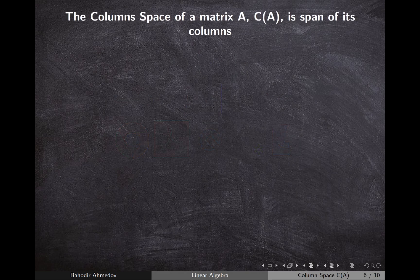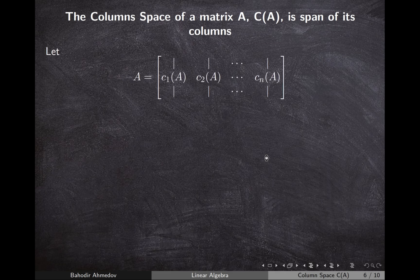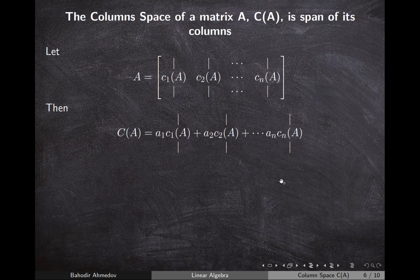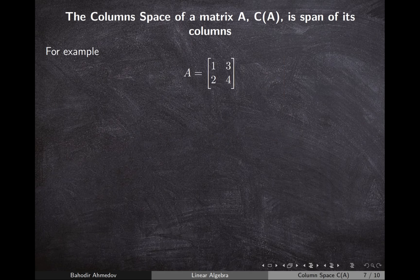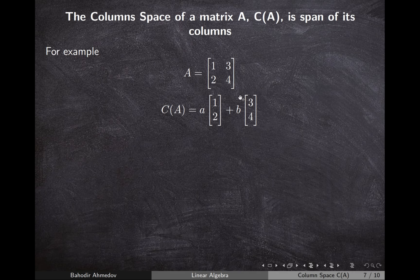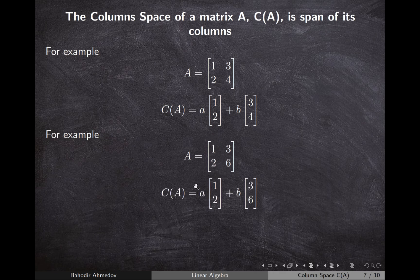The column space of a matrix is the span of its columns. If your matrix has n columns, the column space contains all possible linear combinations of those columns. For example, with matrix A having columns (1, 2) and (3, 4), the column space is the whole 2D space. But with columns (1, 2) and (3, 6), the column space is just a line.